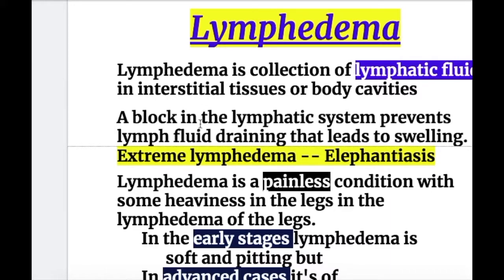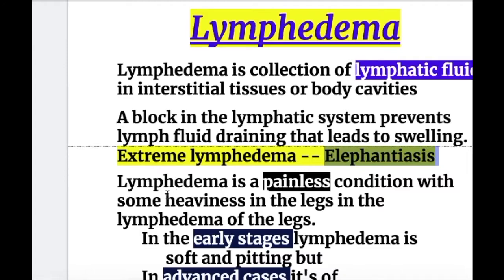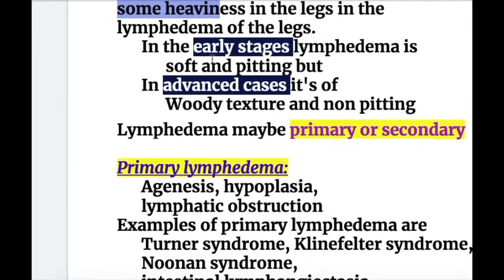Lymphedema is a collection of lymphatic fluid in the interstitial tissues or body cavities. A block in the lymphatic system prevents lymph fluid from draining, leading to swelling. An extreme form of lymphedema occurs in filariasis, which is known as elephantiasis. Lymphedema is a painless condition with some heaviness in the leg. In the early stages, lymphedema is soft and pitting, but in advanced cases it has a woody texture and is non-pitting.